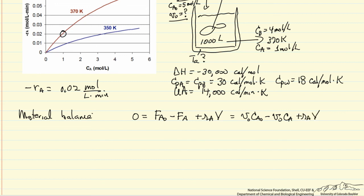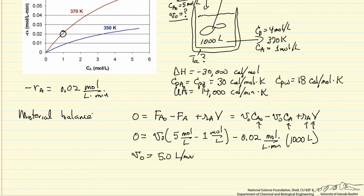So the only thing since we know this, this, this, and this, we can solve for V0. So substituting into the equation, so we can solve for the volumetric flow rate, and this is 5 liters per minute. So that's the first part of the problem.